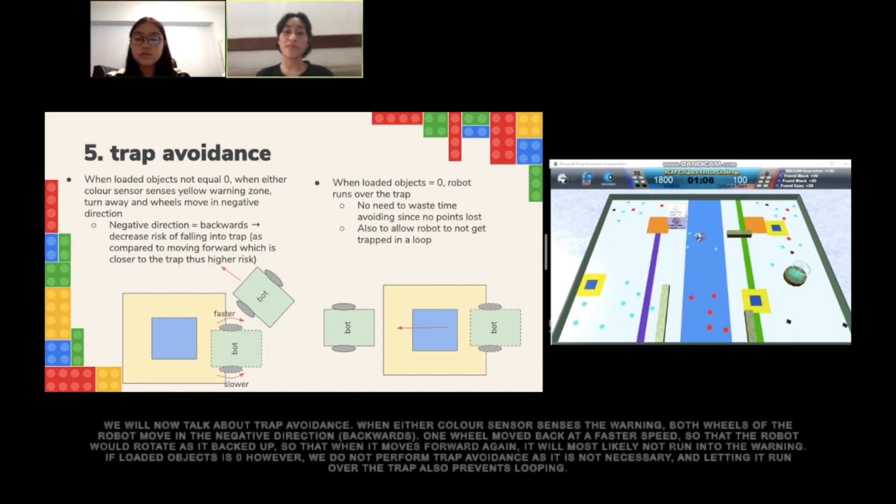We will now talk about trap avoidance. When the color sensor senses the warning, both wheels of the robot move in the negative direction, or backwards. One will move back at a faster speed so that the robot will rotate as it backs up, so that when it moves forward again, it will most likely not run into the warning. If loaded objects is 0, however, we do not perform trap avoidance as it is not necessary, and letting it run over the trap also prevents looping.